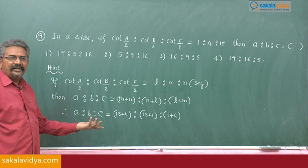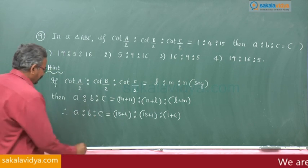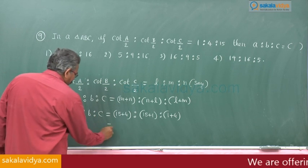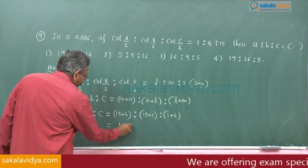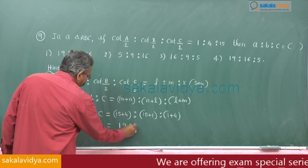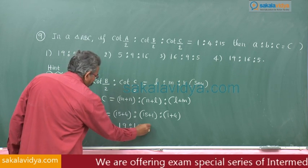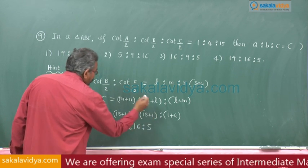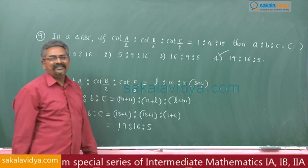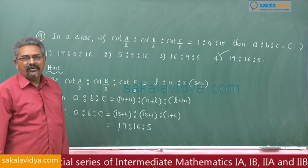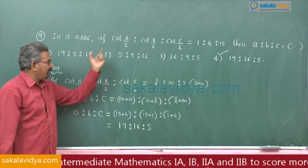Now you can compute very easily: this gives 19 : 16 : 5, which is the right option — the fourth option.